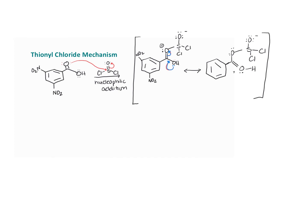The mechanism undergoes a nucleophilic elimination where these electrons come down and the chlorine acts as a leaving group. The resonance structures are shown in blue to distinguish them from the mechanism arrows shown in red.